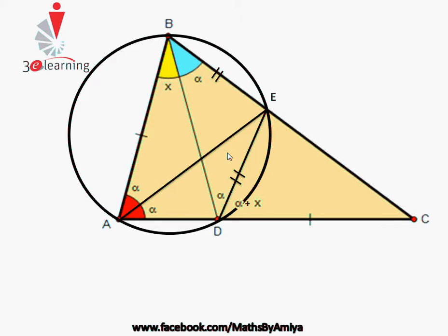Looking at triangle BDE: we have angle α and angle α, so these two sides are equal. Therefore BDE is an isosceles triangle. We have now found almost all the angles we require.